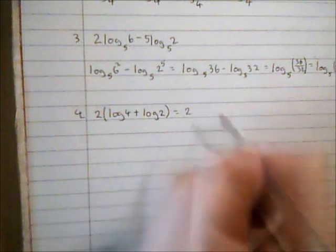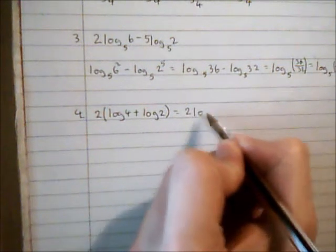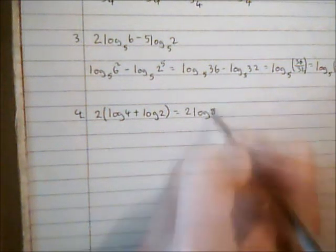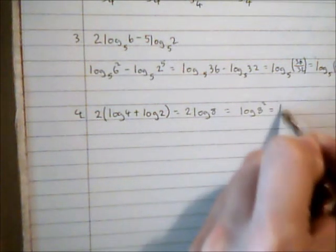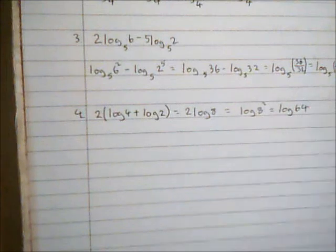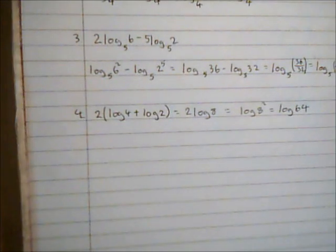So I can combine them directly. That's the same as 2log8, which is then log(8²), which is log64.